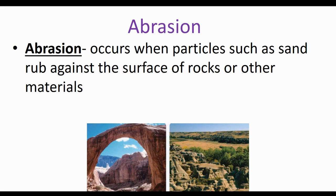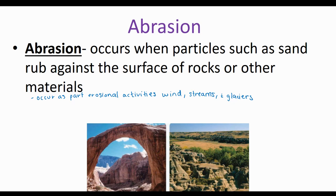Abrasion occurs when particles such as sand rub against the surface of rocks or other materials. Abrasion can occur as part of erosional activities of not only wind but also water — streams and glaciers. In wind abrasion specifically, the wind picks up sand-sized particles and blows them against anything in their path. The wind-blown sand will cause rocks to become pitted and grooved, but the windward side is going to become smooth and polished with continued abrasion.